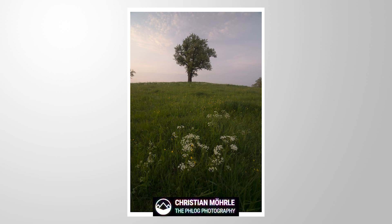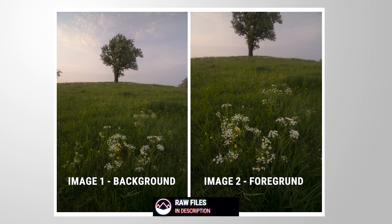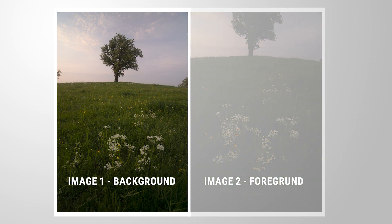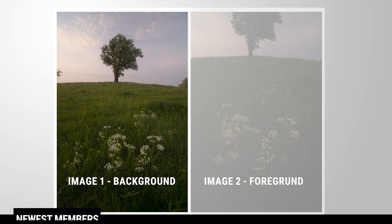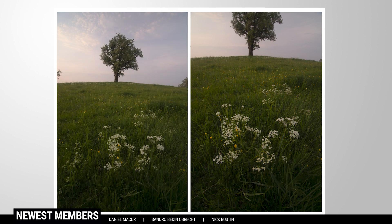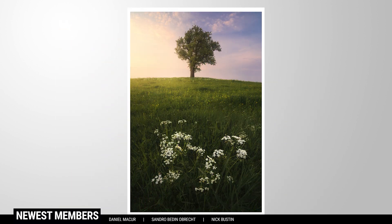Hey everyone, in this Photoshop tutorial I will be talking about focal length blending. This means we will be merging two different images, with one being our base image for the background and the other for the foreground with those white flowers. If you want to give this a try yourself, you can find a link to the raw files in the description of the video. So let's go.